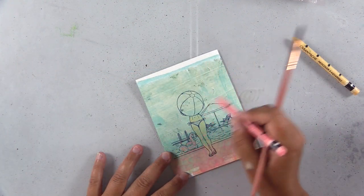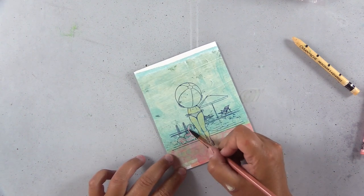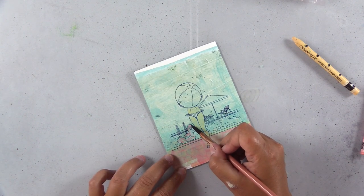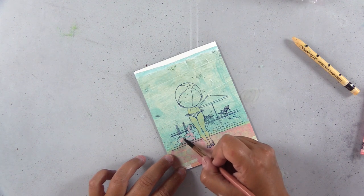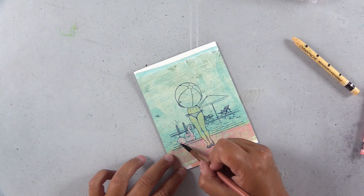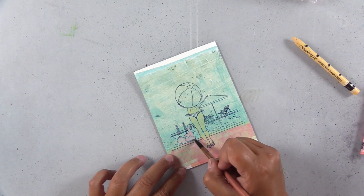So I grabbed my Caran d'Ache Neocolor 2 crayons, and these are water-soluble wax crayons. They work a lot like watercolors. You just use a wet brush and activate them, and I'm finding they're too transparent, which makes sense, right? Because watercolor is transparent.